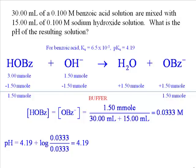There is a useful shortcut: since the volume of the solution is the same for both conjugate acid and conjugate base, we can simply plug in the ratio of millimoles of each directly into the Henderson-Hasselbalch equation. This saves us a couple of steps, especially when the millimoles of conjugate acid and base differ. I'll use this approach for all subsequent buffer calculations. Doing that here gives us the same answer: pH equals 4.19.